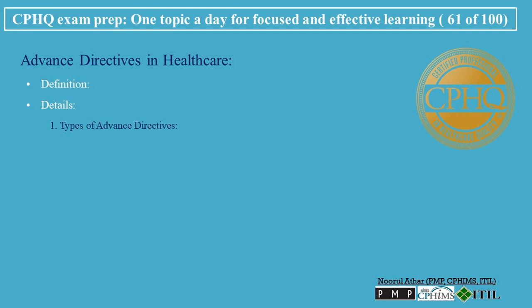Types of Advanced Directives. Living Wills: A living will specifies the types of medical treatment a person wishes to receive or avoid in certain circumstances, particularly concerning life-sustaining treatment.